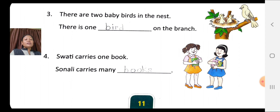Number four: Swati carries one book — look at the picture, it is a singular noun. Sonali carries many books — in the blank you have to write 'books', it is plural.